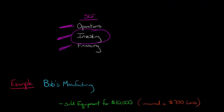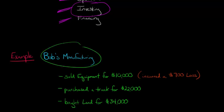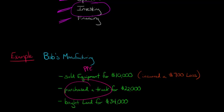Let's walk through an example. We have a company called Bob's Manufacturing, and Bob has the following transactions this year. He's going to sell equipment for $10,000 and incur a $700 loss on that equipment. He's also going to purchase a truck for $22,000 and buy land for $34,000.